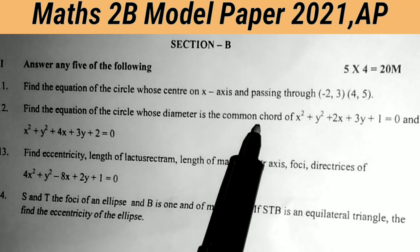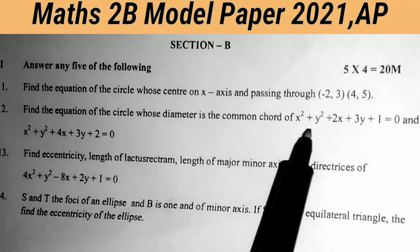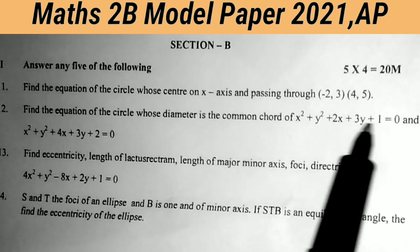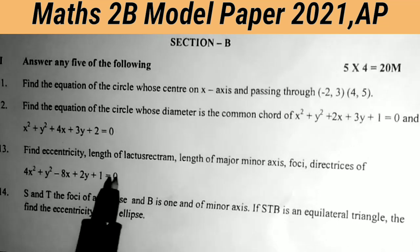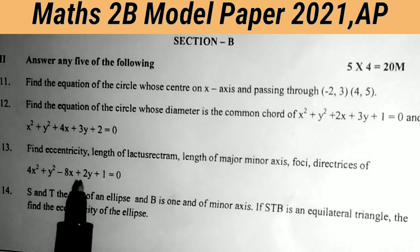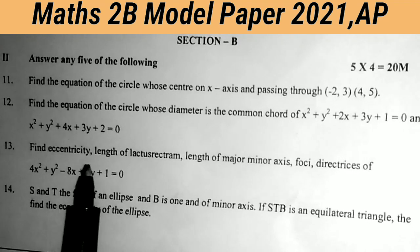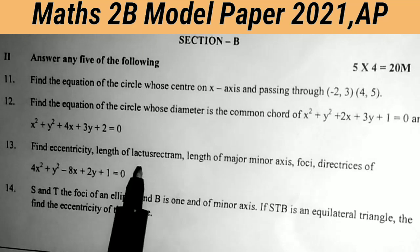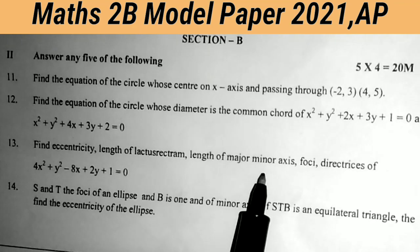Twelfth question: find the equation of the circle whose diameter is the common chord of the circles x² + y² + 2x + 3y + 1 = 0 and x² + y² + 4x + 3y + 2 = 0. Important sum. Thirteenth question: find the eccentricity, length of the latus rectum, length of the major axis, and length of the minor axis.